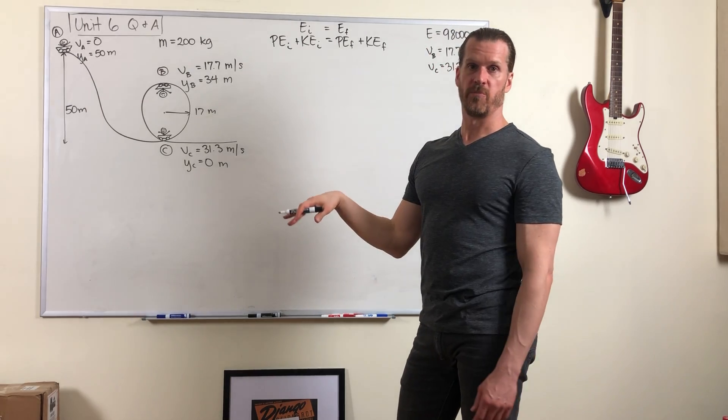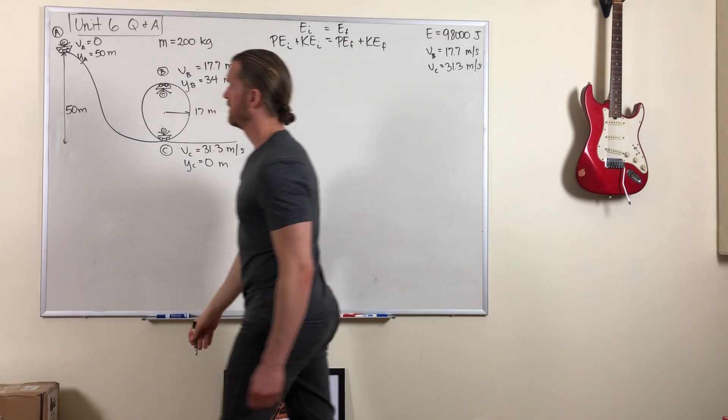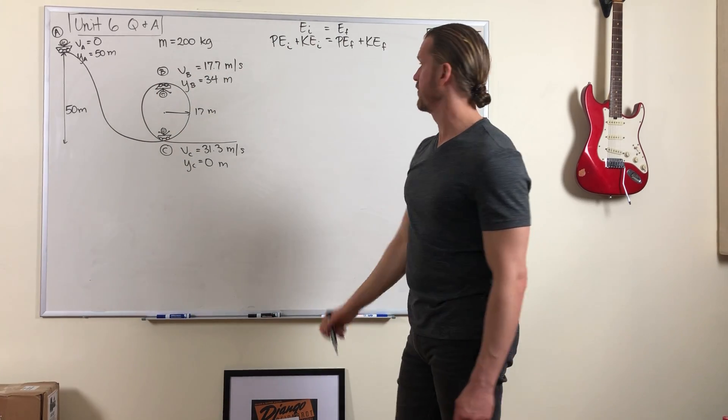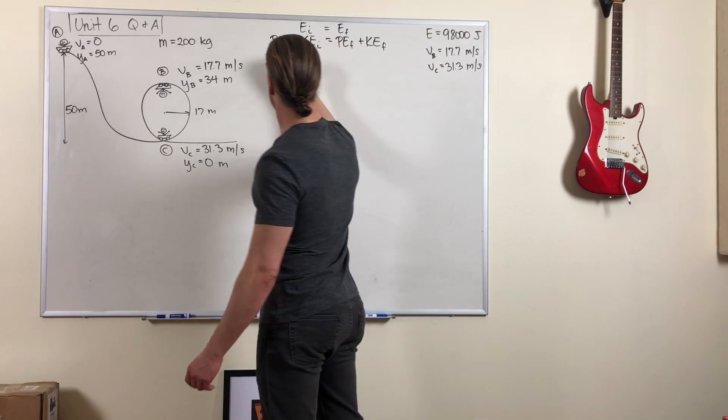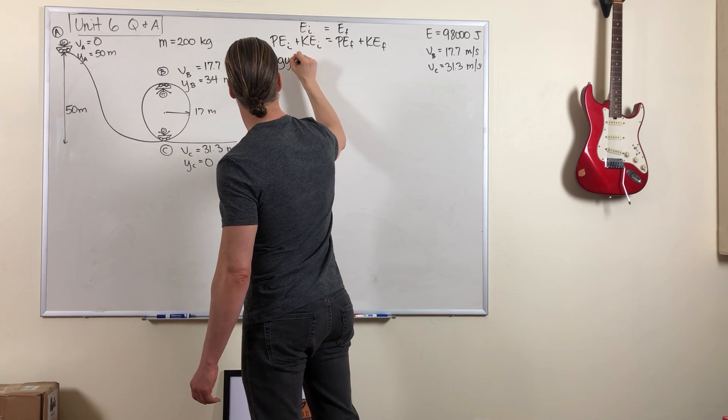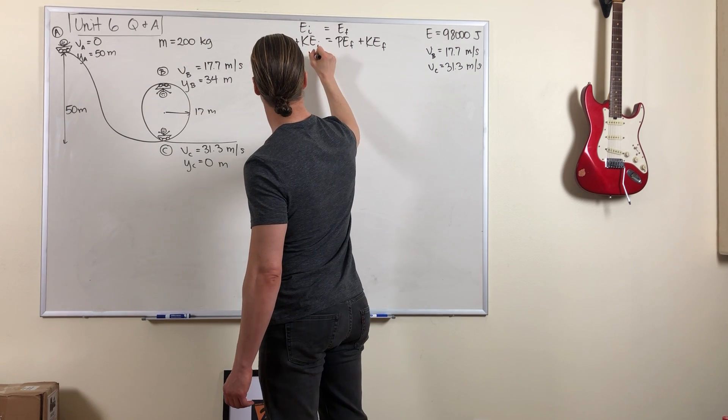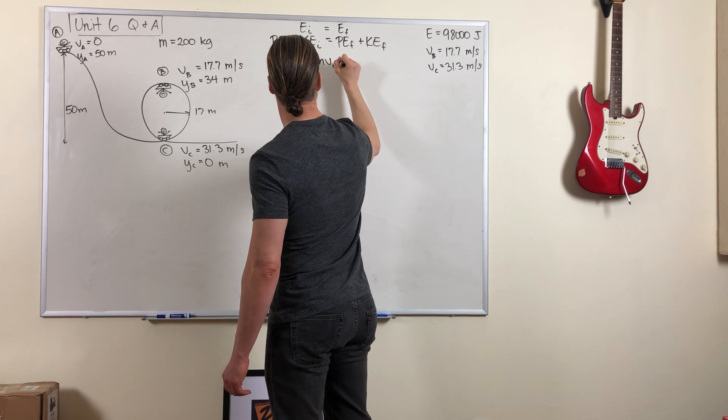And when we solved the problem the first time, we considered the initial position to be at the top of the tallest hill of the roller coaster. So gravitational potential energy looks like mgy and kinetic energy is one half mv squared.